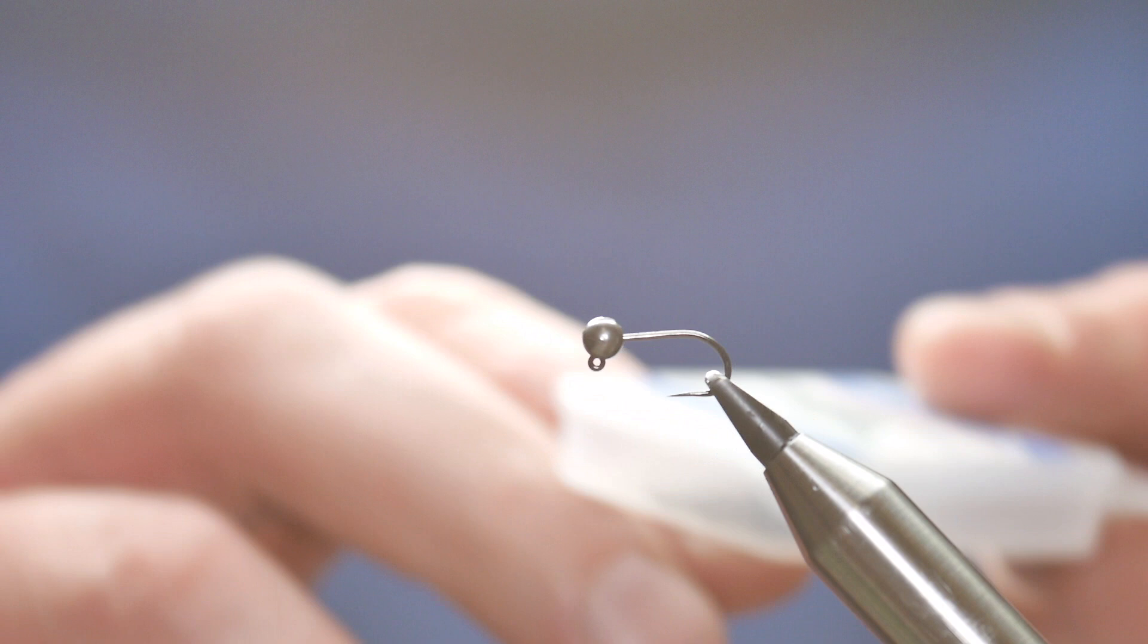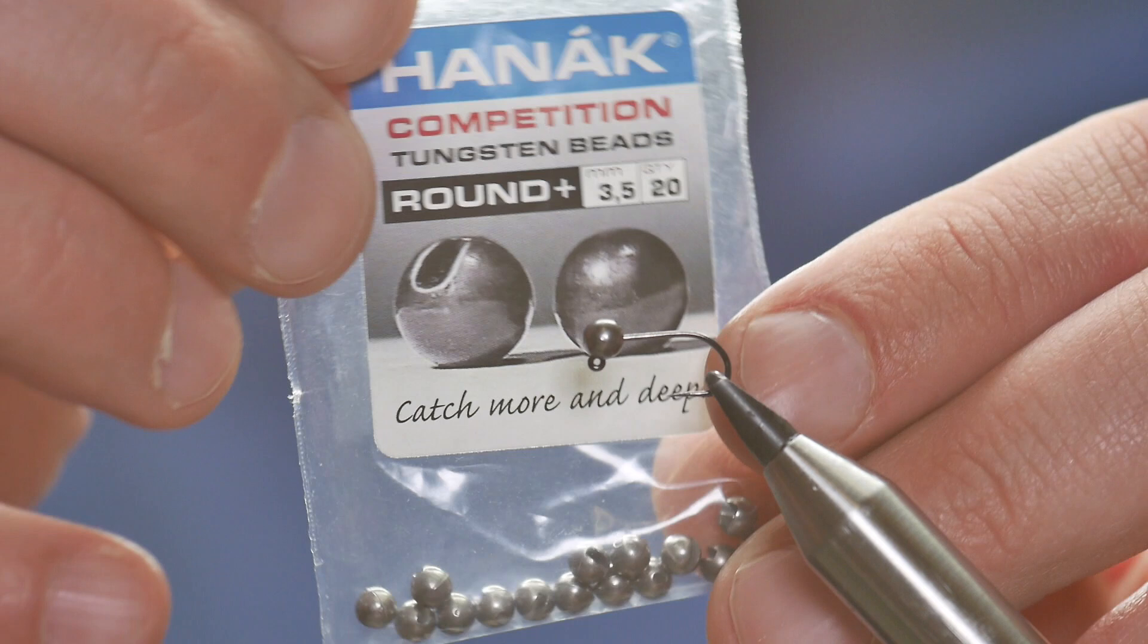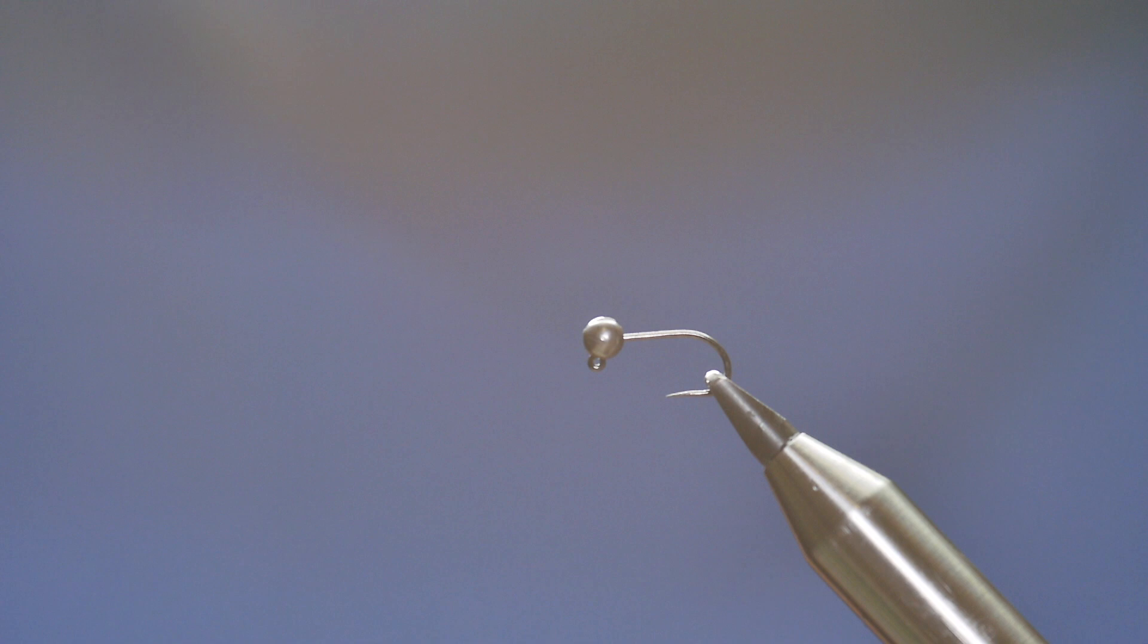Right, so in the vice is a Hanak 470 barbless hook. It's at size 14 and I've coupled that with a Hanak 3.5 slotted tungsten bead. Now the fly Del originally gave me was a size 16 with a 2.5 millimeter bead. But for demonstration purposes I've decided to up the proportions so that you can see what I'm doing a bit better.